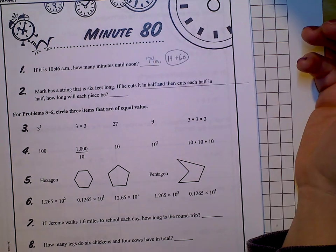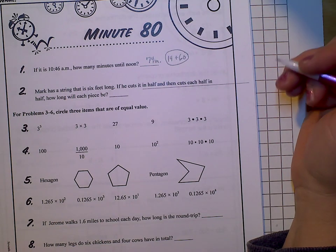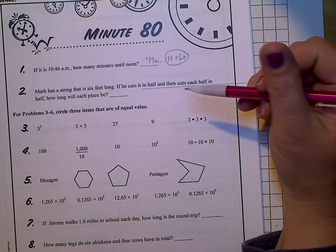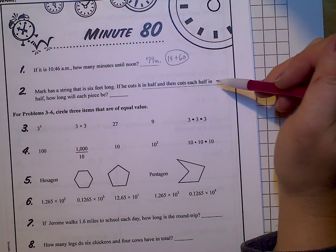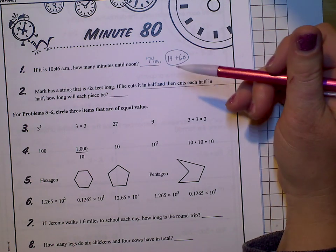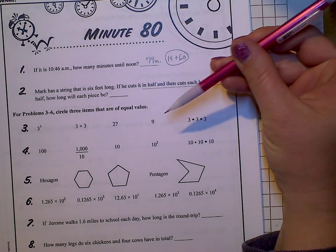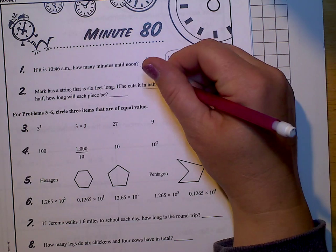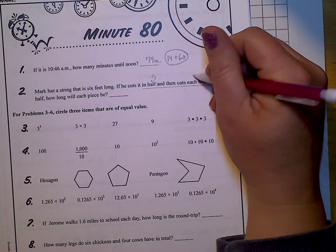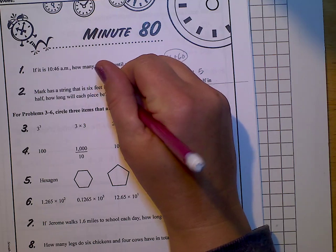If Mark has a string that is 6 feet long, if he cuts it in half and then cuts each half in half, how long will each be? Why does he have just a string that's 6 feet long? That seems like there would be a purpose for that. I don't know, maybe he should talk to his parents. Okay, so half, he cuts it in half, so that's 3 feet. Then he cuts each half in half, so half of 3 is 1 and a half. How long will each piece be? 1.5 feet.